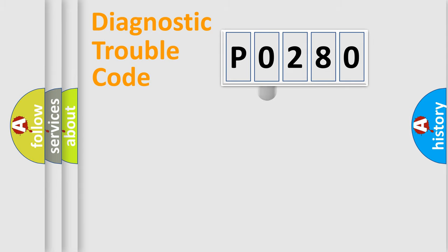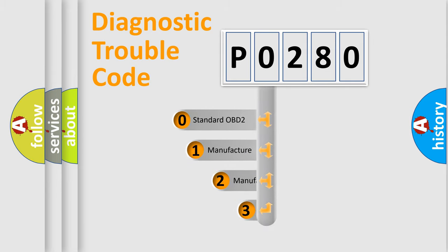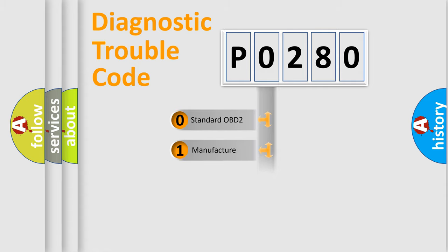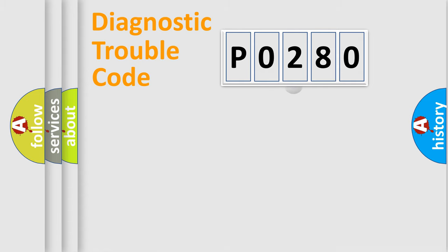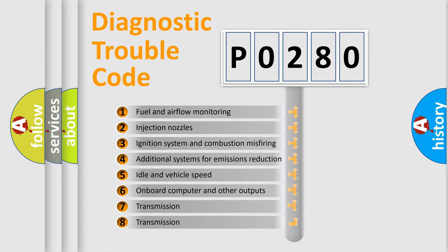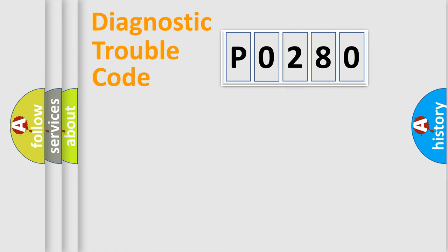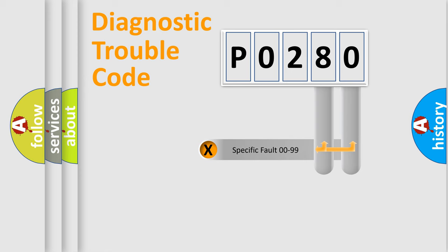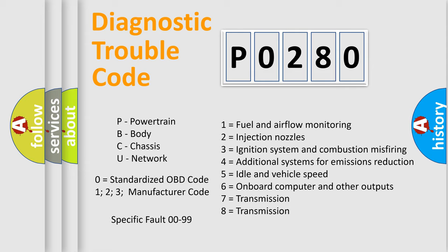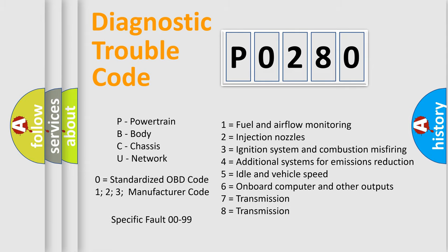This distribution is defined in the first character of the code. If the second character is expressed as zero, it is a standardized error. In the case of numbers 1, 2, or 3, it is a manufacturer-specific error expression. The third character specifies a subset of errors. The distribution shown is valid only for the standardized DTC code. Only the last two characters define the specific fault of the group, and this division is valid only if the second character code is expressed by the number zero.